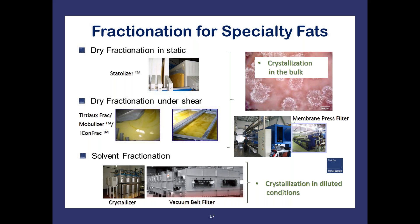Fractionation in general, and fractionation for specialty fats in particular, is divided into stages. A crystallization stage can be conducted dry in the bulk, or in solvent after dilution in acetone or hexane. A separation stage follows, for which the membrane press filter is today the most suitable technology. In dry fractionation, crystallization can be operated in static mode or under shear depending on the characteristics of the oil being processed. In solvent fractionation, crystallization is conducted at typical ratios of, for example, 1:3 or 1:4 oil-to-solvent, and the slurry is filtered through a vacuum belt filter.